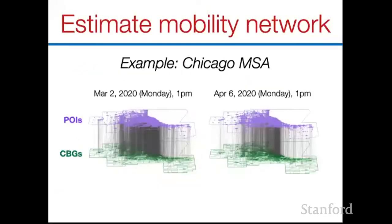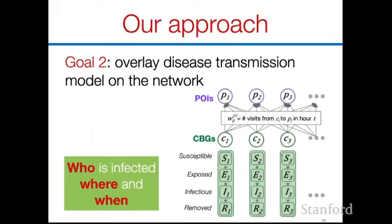We use IPF to estimate the true mobility networks from the noisy SafeGraph data. To visualize: in Chicago, comparing early March to early April after social distancing took effect, gray lines represent hourly visits from CBGs to POIs. The density of lines decreases from March to April indicating reduced total mobility, and most lines are vertical indicating people mostly stay near their homes. The main point is we have a network linking POIs to CBGs at an hourly level. Now we put a disease transmission model on top of this network, relying on a standard epidemiological SEIR model.